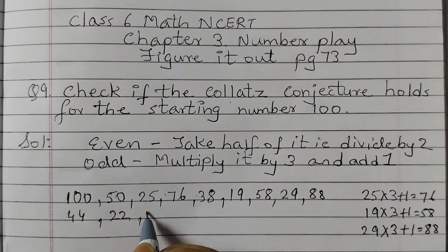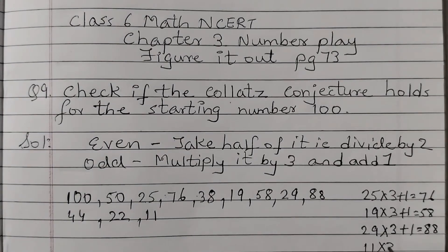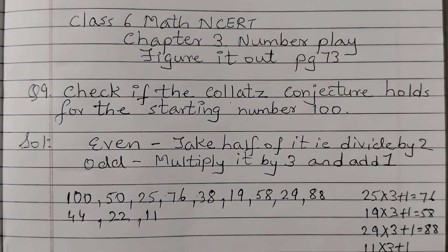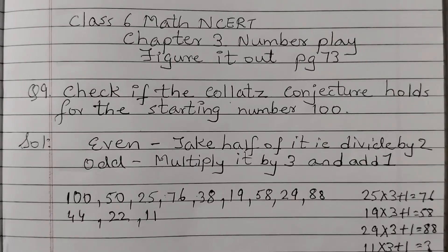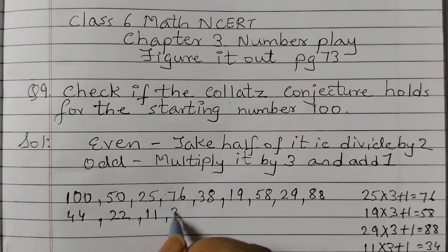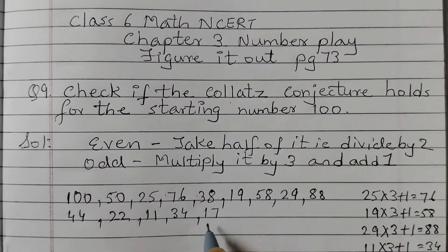Even number divide by 2, 11. 11 into 3 plus 1, 11 times 3 is 33, plus 1, 34.